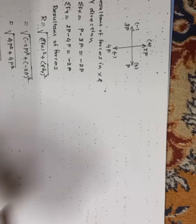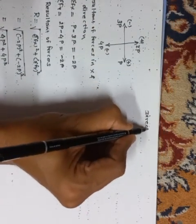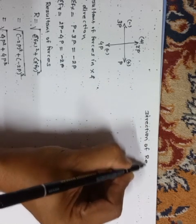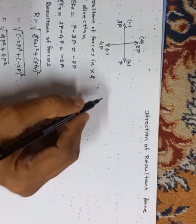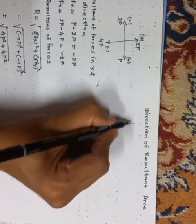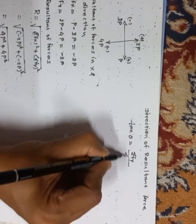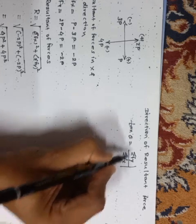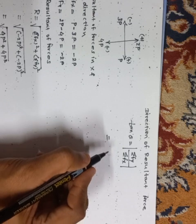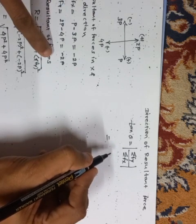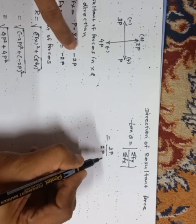Now, we want to find the direction. So, direction of resultant force, we know the formula, tan theta is equals to summation of fy upon summation of fx, it is absolute actually. So, no need to write the sign. So, we got summation of fy as minus 2P, so it is 2P divided by summation of fx is also 2P.